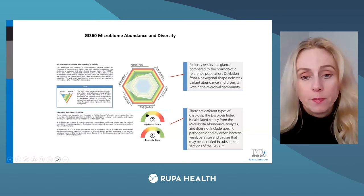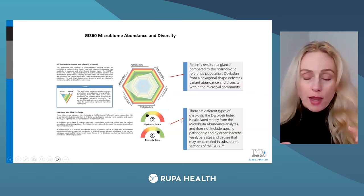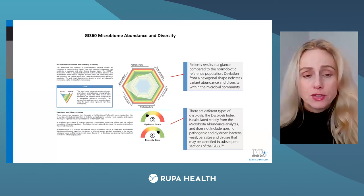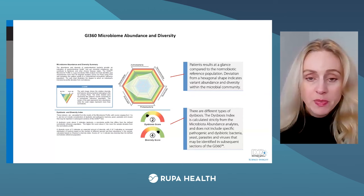The healthy individuals have this white hexagonal microbiome. There's no dysbiosis, and there's healthy diversity. That's what you want your patient to be on — that normobiotic reference range. We're looking at your patient's web: this is their microbiome abundance and diversity on the normobiotic reference range by phyla.